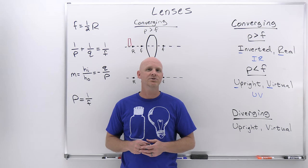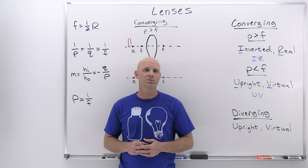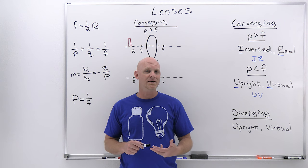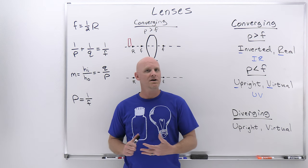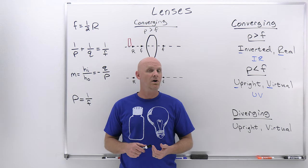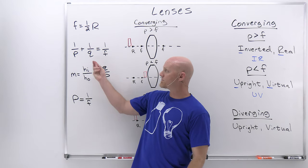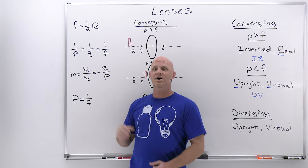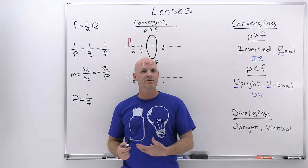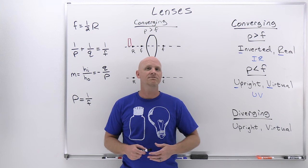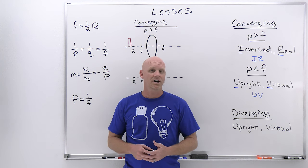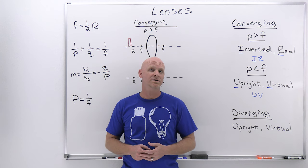Lenses is going to be the topic of this lesson in my new general physics playlist, which when complete will cover a full year of university algebra-based physics. We're going to talk about thin lenses specifically, and everything we learned about mirrors is going to be fairly analogous. The mirror equation is also called the thin lens equation: 1/p + 1/q = 1/f. Magnification is defined the same way. We'll also apply this to combinations of lenses and to the human eye.